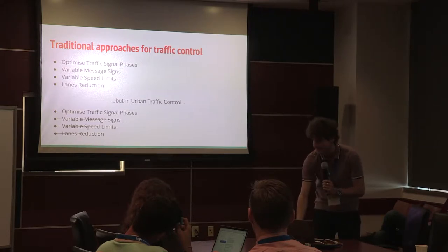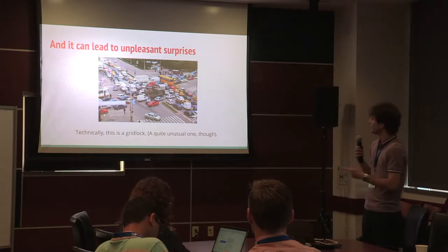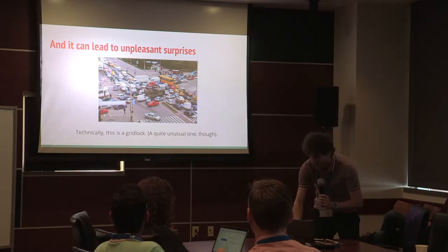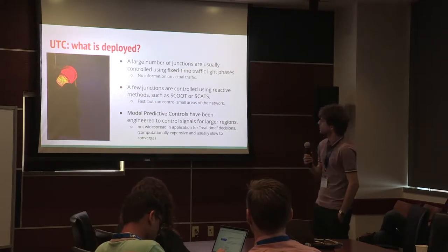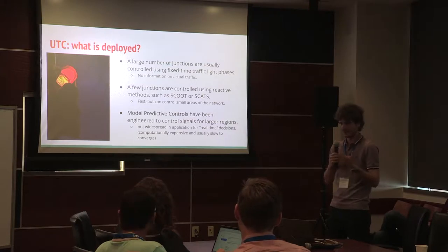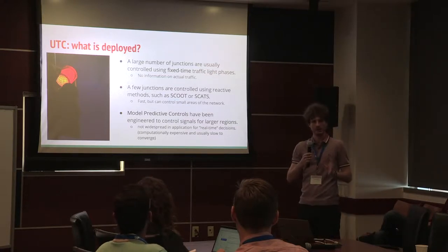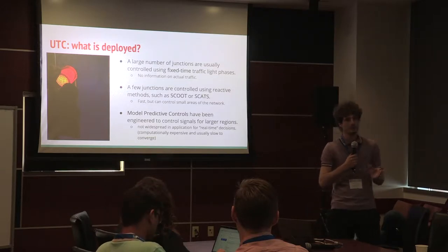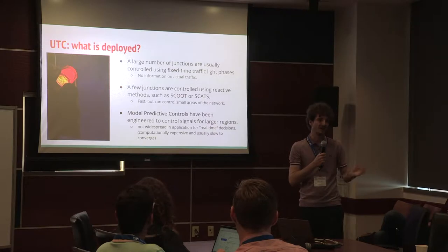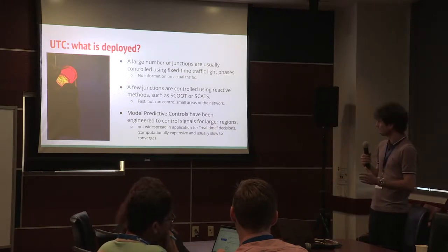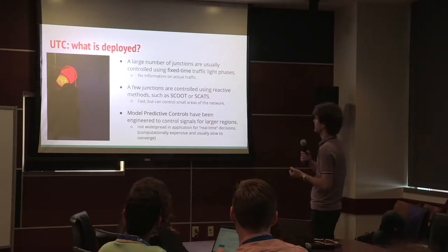Optimizing traffic signal phases can also make things worse — you can create gridlock. What is deployed right now on our roads? A large number of junctions are controlled using fixed-time traffic light phases. Fixed time means the length of each green and red phase has been optimized manually, usually using simulators, and is then used without any knowledge of the current traffic situation. It tends to work well when conditions are as expected; otherwise, you get congestion.